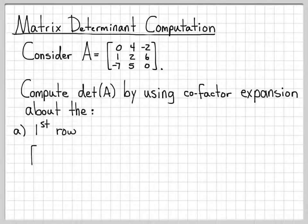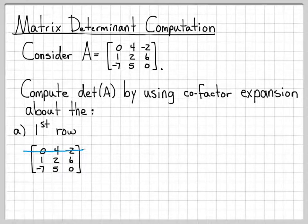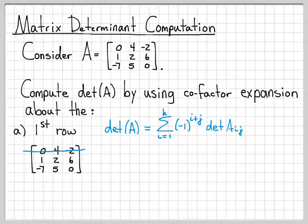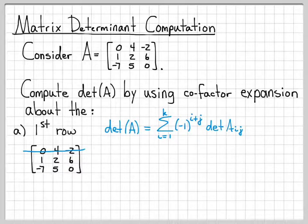Let's start by doing it for the first row. I'm going to write down the matrix and expand about the first row, drawing a line through the first row to indicate that's the row we're expanding about. The equation we're going to implement to compute the determinant involves computing a summation of different terms, each with a certain sign.